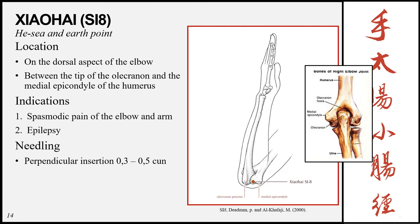Xiaohai, Small Intestine 8, is the he-sea and earth point. It is located on the dorsal aspect of the elbow between the tip of the olecranon and the medial epicondyle of the humerus. Indications include spasmodic pain of the elbow and arm, and epilepsy. Insertion is perpendicular 0.3–0.5 cun — shallow because the bone lies deep to this position.